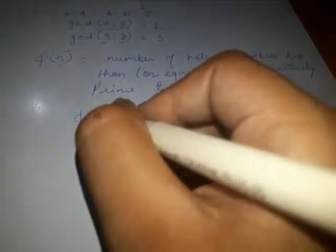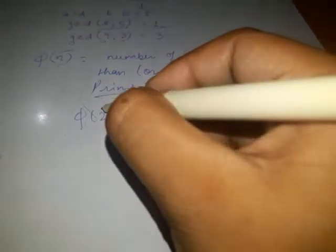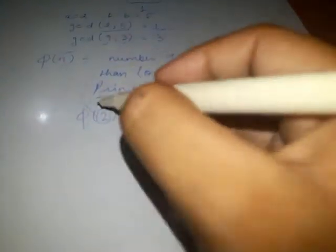For example, if we take phi 2, then the numbers less than 2 and relatively prime to 2, meaning the GCD must be 1, that is only 1. If we consider 2, then the GCD of 2 and 2 will be 2, so we cannot take 2 because we need those numbers which have GCD as 1.